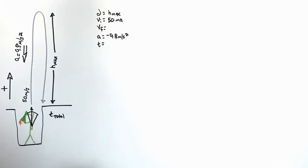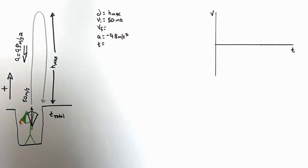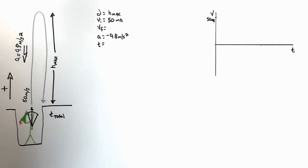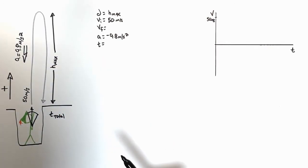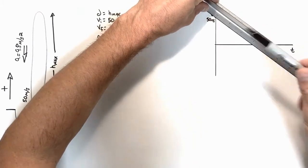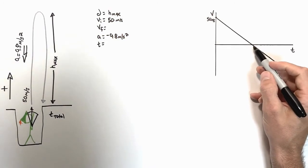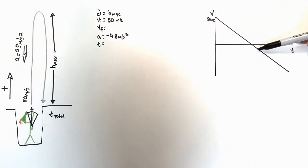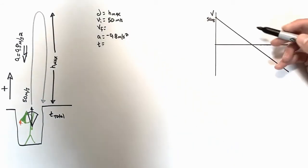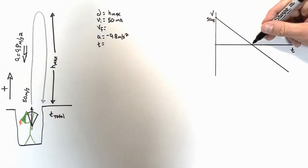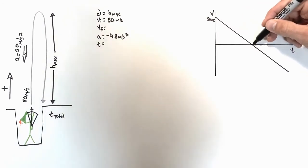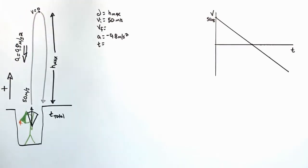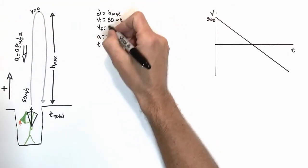Let's graph velocity versus time for this arrow while it's in the air. The arrow is fired at 50 meters per second. With every second that goes by, the velocity decreases by 9.8 meters per second — a diagonal line with a constant negative slope. When velocity is positive, the arrow is moving upward; when negative, it's moving downward. There's a point where velocity is zero — that's the maximum height. So when solving for maximum height, the final velocity is zero.